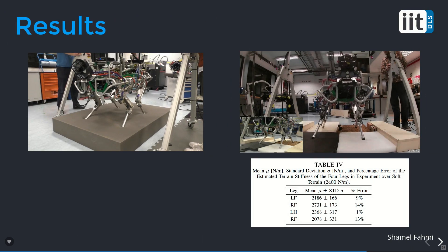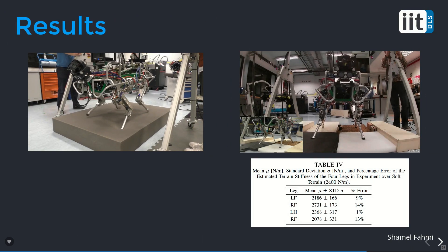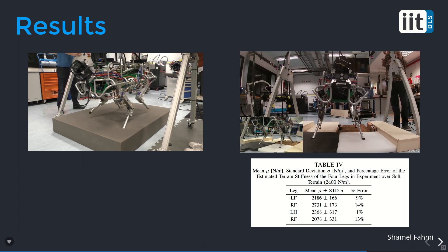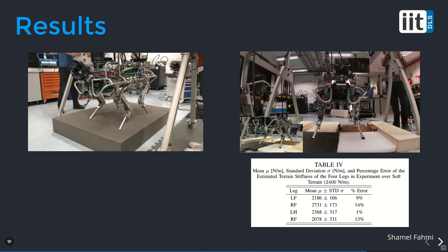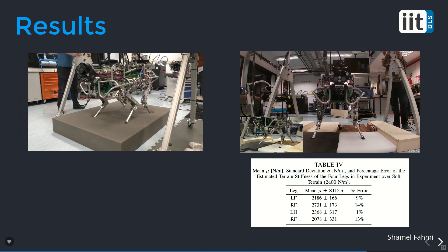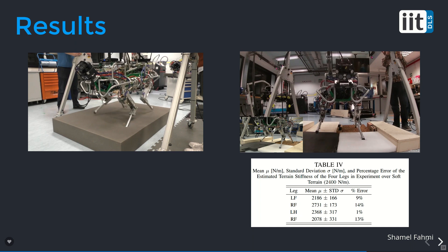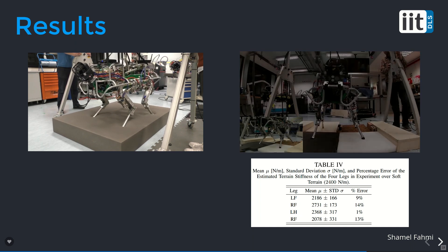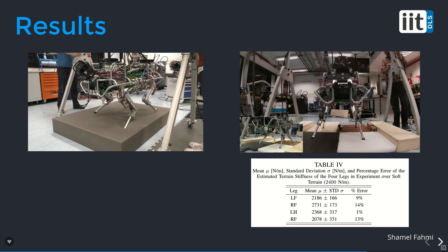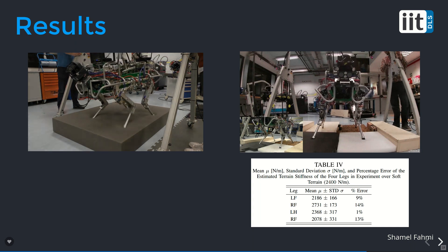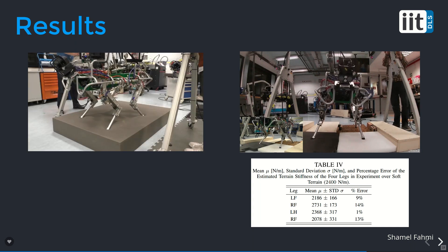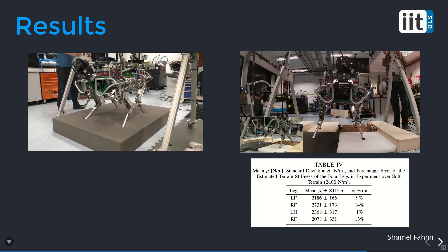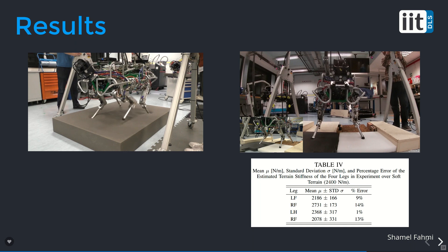Here you can see a more dynamic gait with STANCE, such as a trotting gait. You can also see on the right the performance of the terrain compliance estimator where HiQ is walking over four different terrain compliances. Each leg can independently estimate different stiffnesses, as shown in the table below.